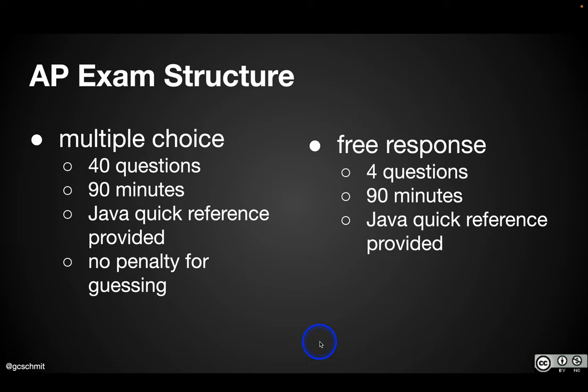Here's the structure of the AP CSA exam. It's broken into two parts. The multiple choice part has 40 questions and you have 90 minutes to do it. That works out to just over two minutes per question. That is the pacing we've been using all year, so you should find that familiar.